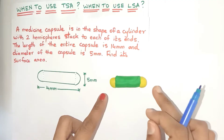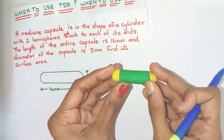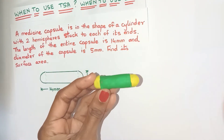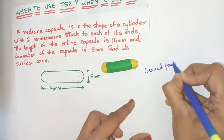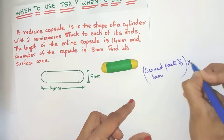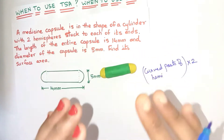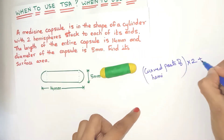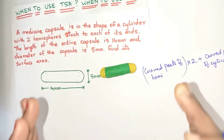To find the surface area of this solid, which surfaces do we have to consider? Surely the two curved parts of the hemispheres are on the surface, so they will definitely be included. Also the curved part of the cylinder is also on the surface, so we include that too.